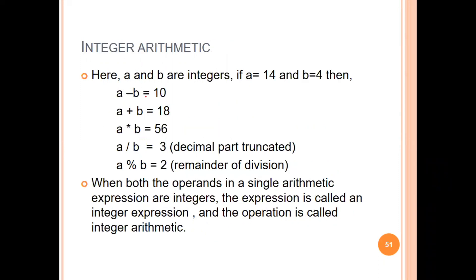For integer arithmetic, we can perform integer operations. For example, if A and B are integer variables — A is equal to 14 and B is equal to 4 — then A divided by B is 14 divided by 4, and we will get the answer as 3, since integer arithmetic truncates the decimal part.